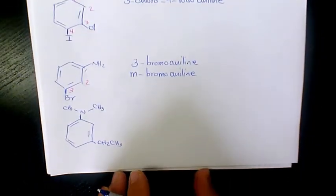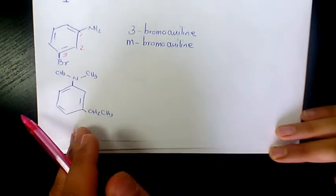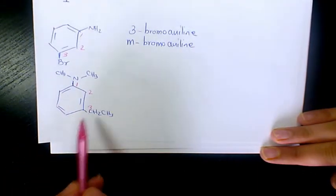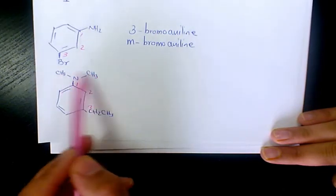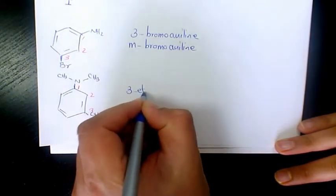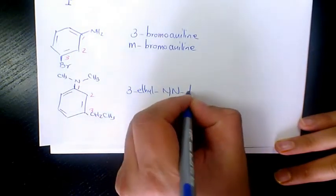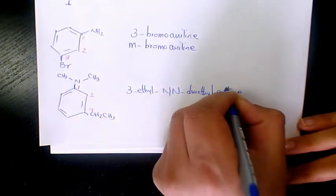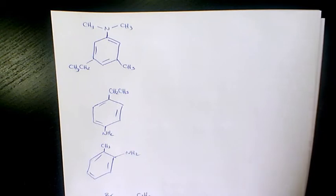What about the next one? Here we have one, two, and three — so we start numbering this way. There are ethyl groups on the ring, and the two hydrogens on the amino group are substituted by methyl groups. So we have 3-ethyl-N,N-dimethylaniline — that's how you name it.